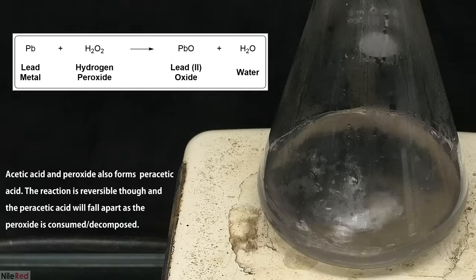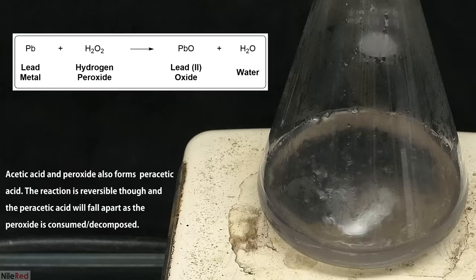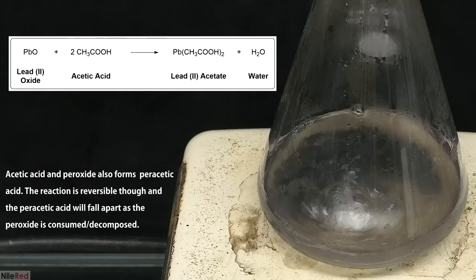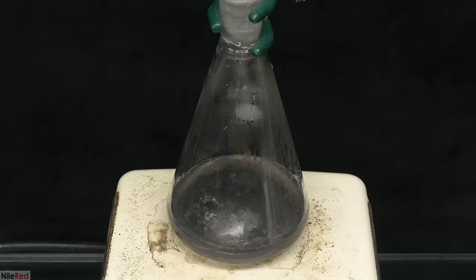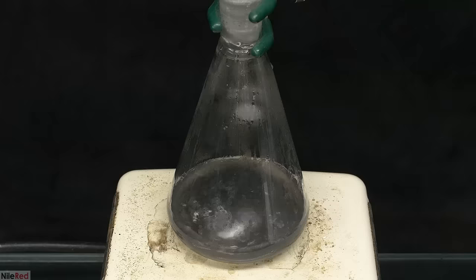So in terms of what's going on here, when the hydrogen peroxide is added, it reacts with the lead metal to form lead oxide. The lead oxide then very quickly reacts with the acetic acid in the same way that we saw earlier in the video. The reason why we need the peroxide is because the acetic acid is not strong enough to directly oxidize the metal.